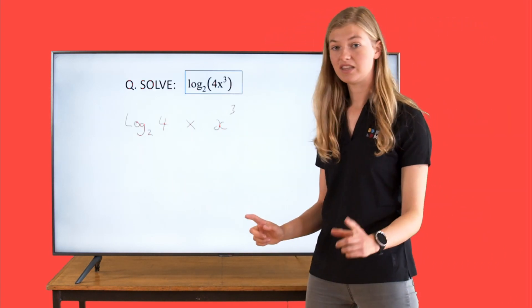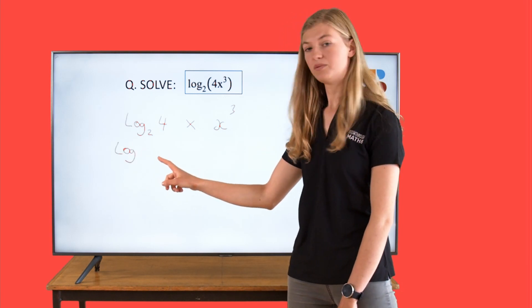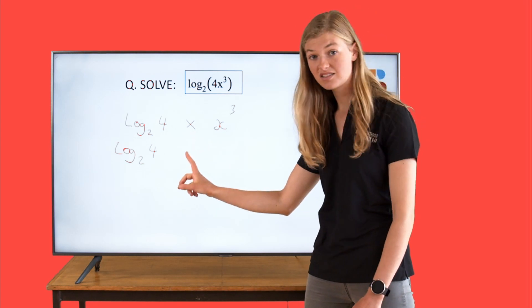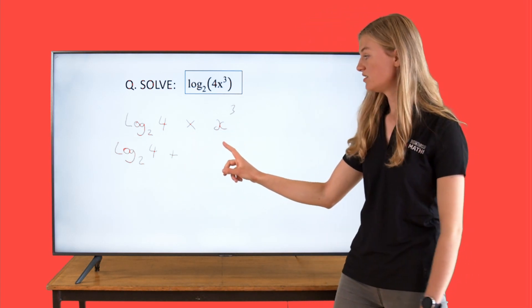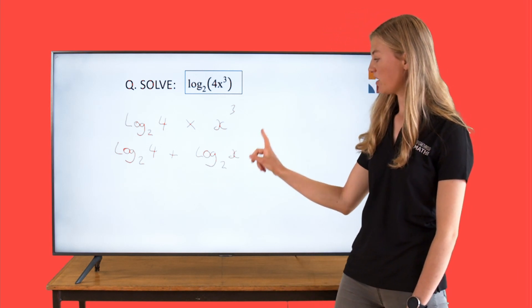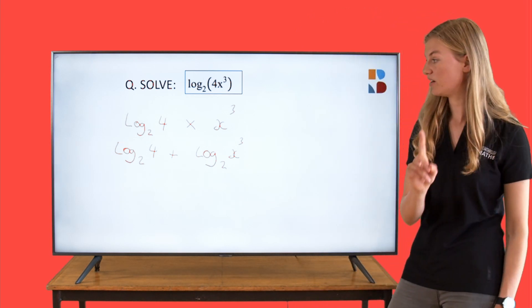Okay. We can rewrite this as log to the base 2 of 4 plus log to the base 2 of x to the power of 3. Exactly the same still. So we've just used that first rule that we saw earlier.